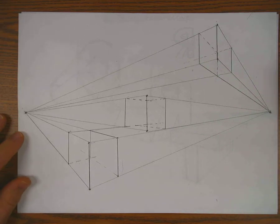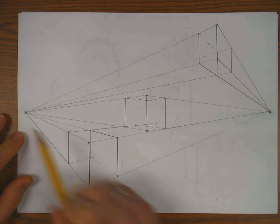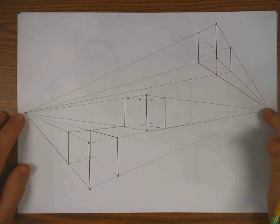Alright, we have learned one-point perspective. Now we are going to do two-point perspective, which means there are two vanishing points, one on either side of the paper.